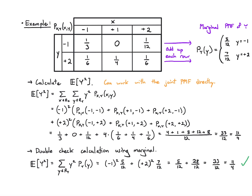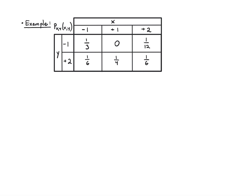Both ways work — whichever one you prefer. In the same example, let's calculate E of X squared Y. This is a different function, but I'm going to follow the same process: write the sum over x and the sum over y of x squared times y times the joint PMF.